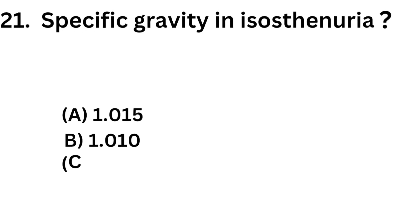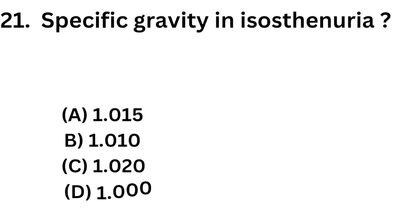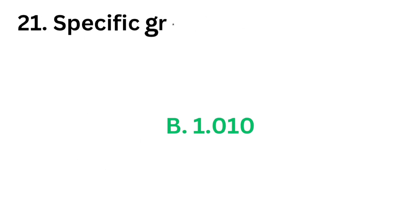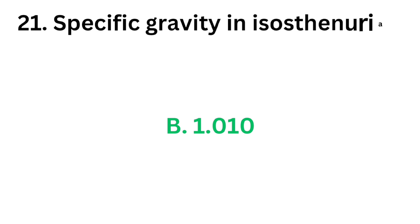Question number 21: Specific gravity in isosthenuria. Option A: 1.015. Option B: 1.010. Option C: 1.020. Option D: 1. The correct answer is Option B: 1.010. Specific gravity in isosthenuria is 1.010. Urine with a fixed specific gravity of 1.010 is called isosthenuria.